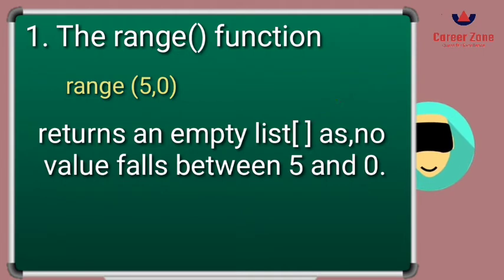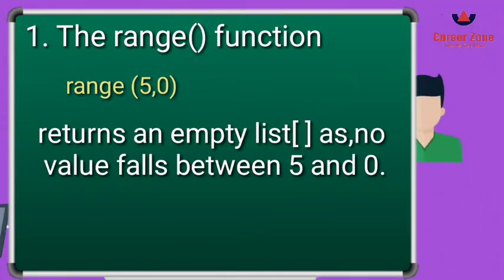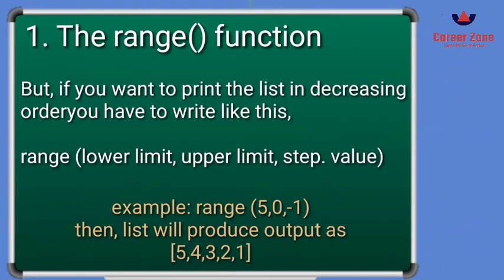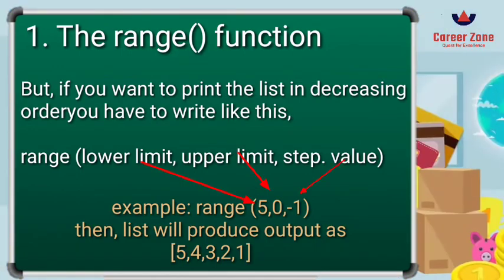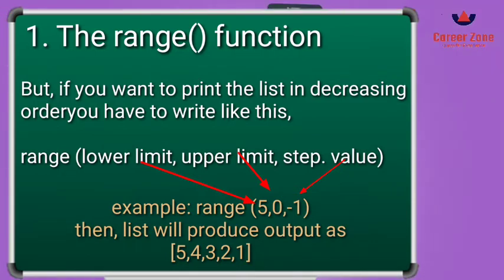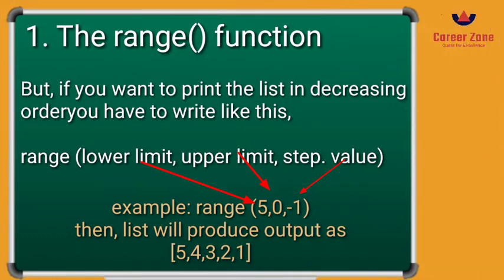You will get an empty list because there is no value between 5 and 0. But if you want to print the range in decreasing order starting from 5 down to 0, you need to add a step value. The syntax is: range(lower limit, upper limit, step value). For example, range(5, 0, -1) — here -1 is the step value because I want to decrease by 1. If you want to decrease by 2, you can write -2. This will produce output starting from 5 till 1.